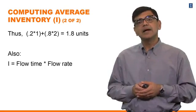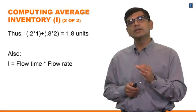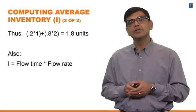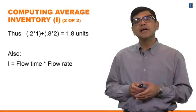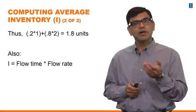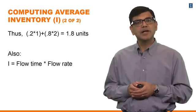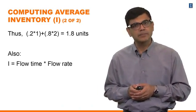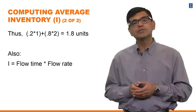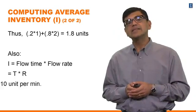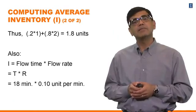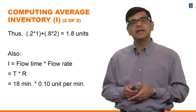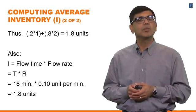The same result you could have got by multiplying the flow time of this process with the throughput rate. The flow time is 18 minutes, and the flow rate is 0.1 units per minute. Take the product of those two, and you get the same answer — 1.8 units — that you got by analyzing average inventory the long way.